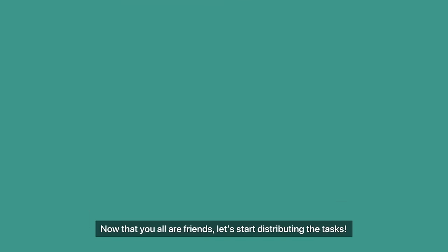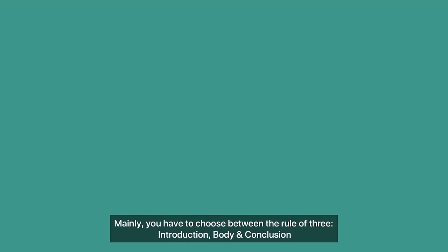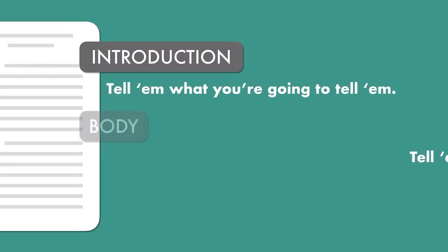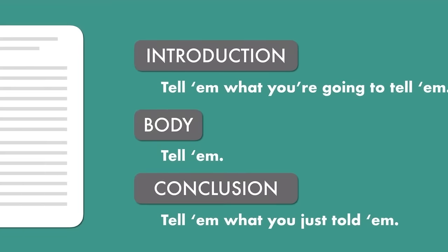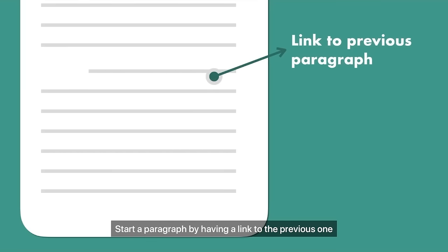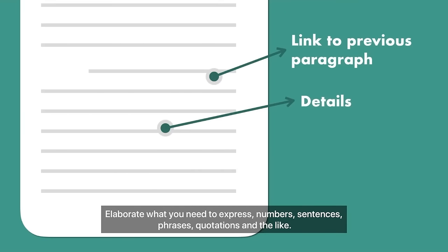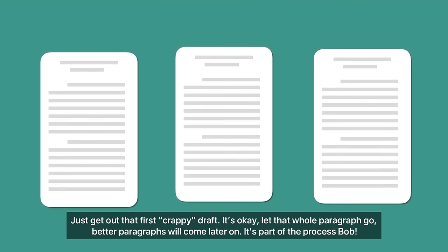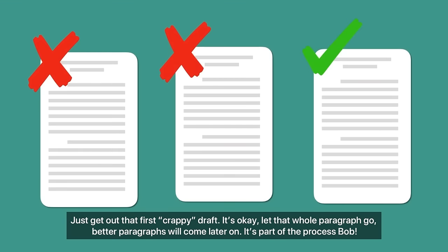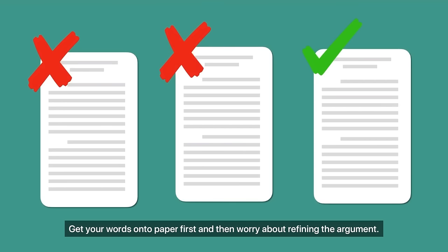Now that you're all friends, let's start distributing the tasks. Mainly, you have to choose between the rule of three: introduction, body, and conclusion. Basically — introduction: tell them what you are going to tell them. Body: tell them. Conclusion: tell them what you told them. And per paragraph: link to the previous paragraph, then add details — numbers, sentences, phrases, quotations and the like — then conclude and link to the next paragraph to stay cohesive. Just get out that first crappy draft. It's okay, let that whole paragraph go — better paragraphs will come later. It's part of the process, Bob. Get your words onto paper first, and then worry about refining the argument.